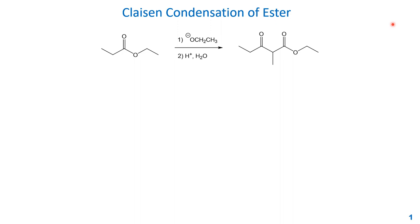Hello everyone, welcome back to my organic chemistry mini lecture. Today our topic will be Claisen condensation, which is an example of the reaction of enolate. Enolate can be generated by deprotonation of the alpha proton of carbonyl compounds. This Claisen condensation of an ester will give you the beta-ketoester as the general structure, and today we're going to use a base as the catalyst.